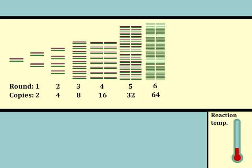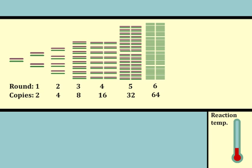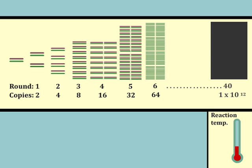By the time the thermocycler has completed 40 cycles, the primers and nucleotides will likely be exhausted, but there will theoretically be 10 to the 12 copies. The target sequence will have been amplified a trillion times.